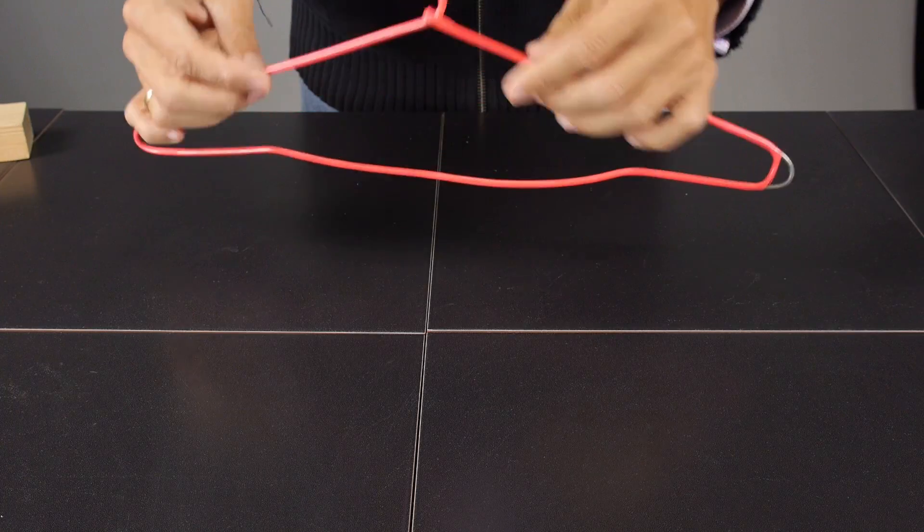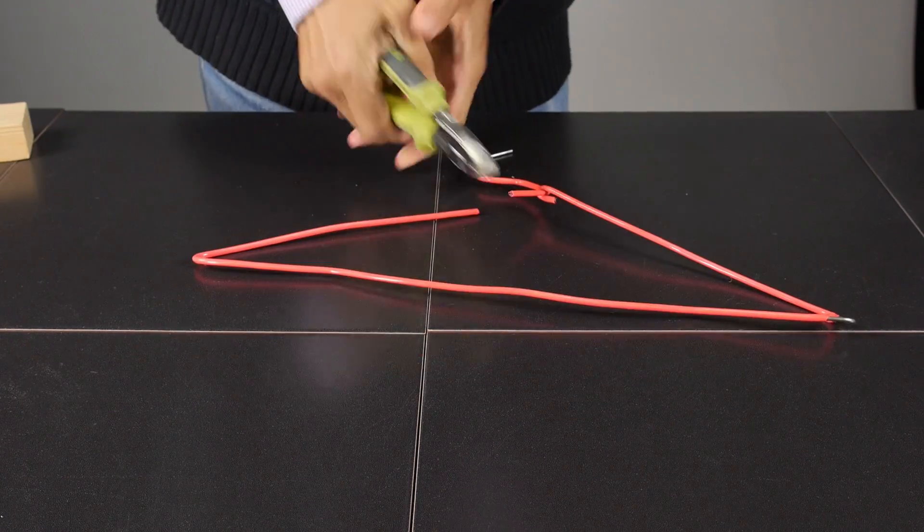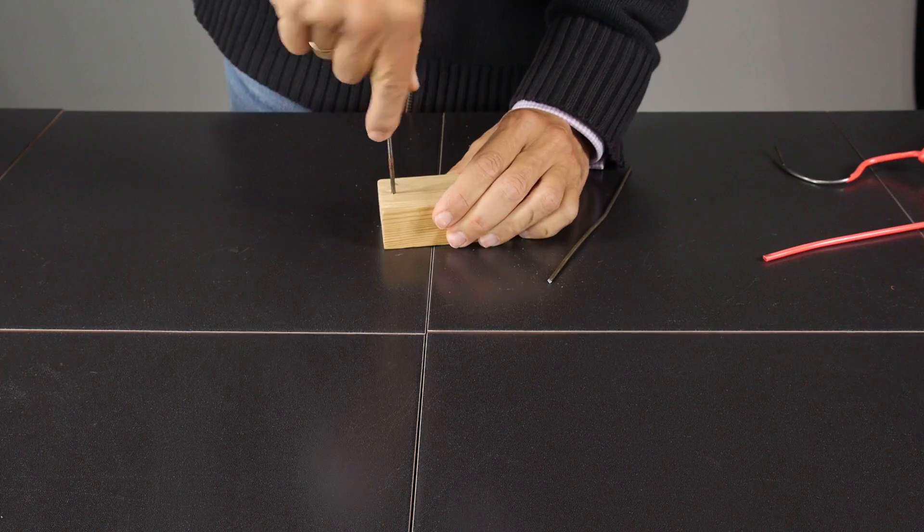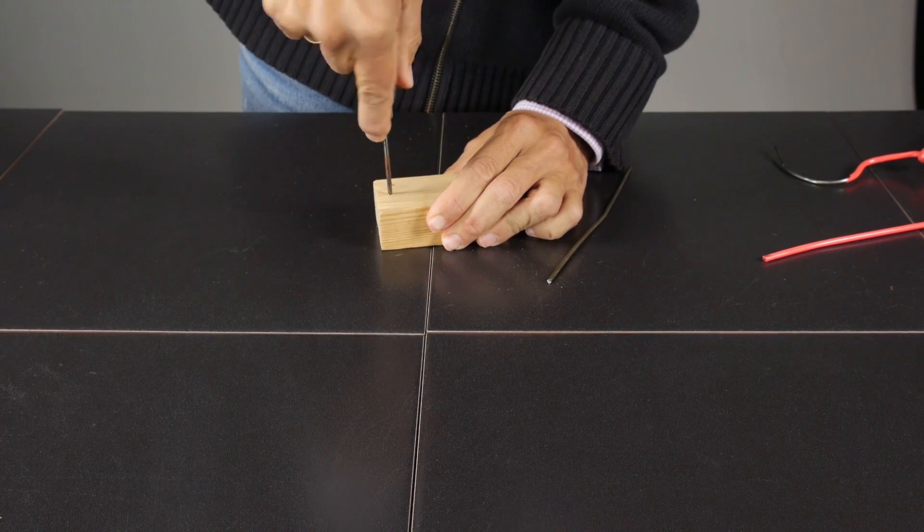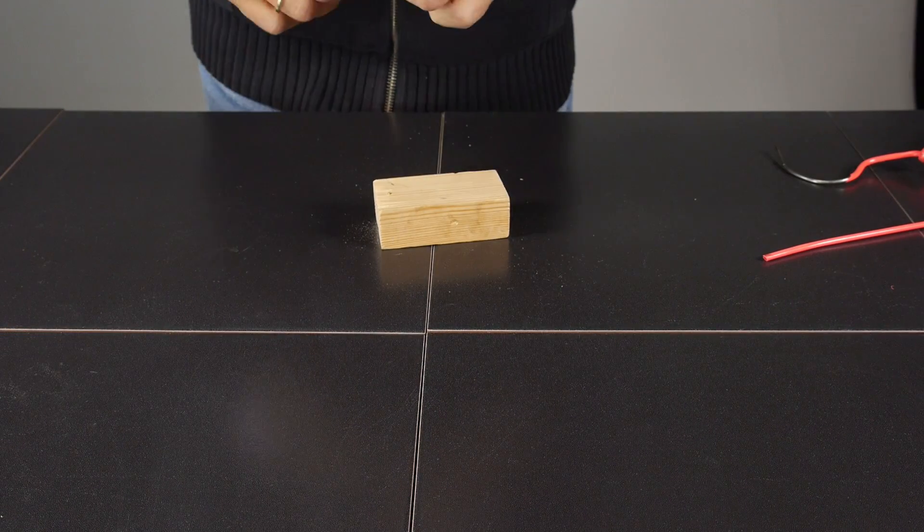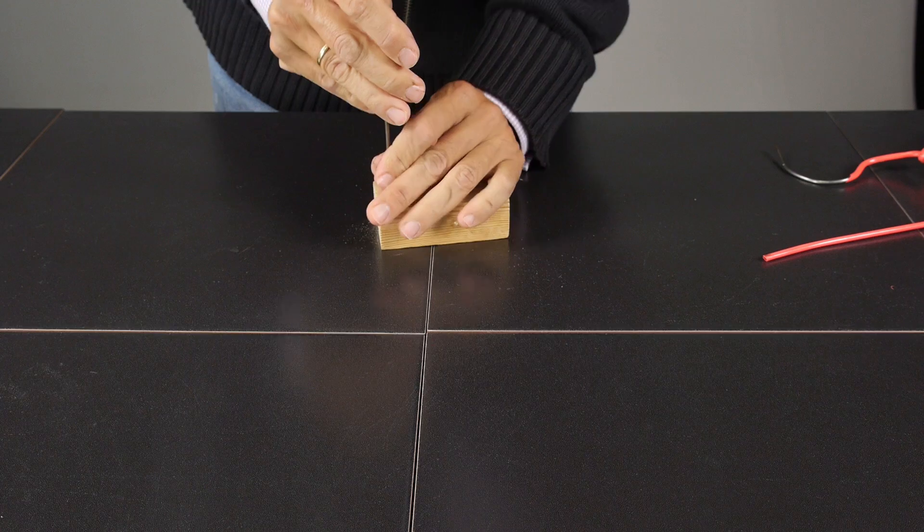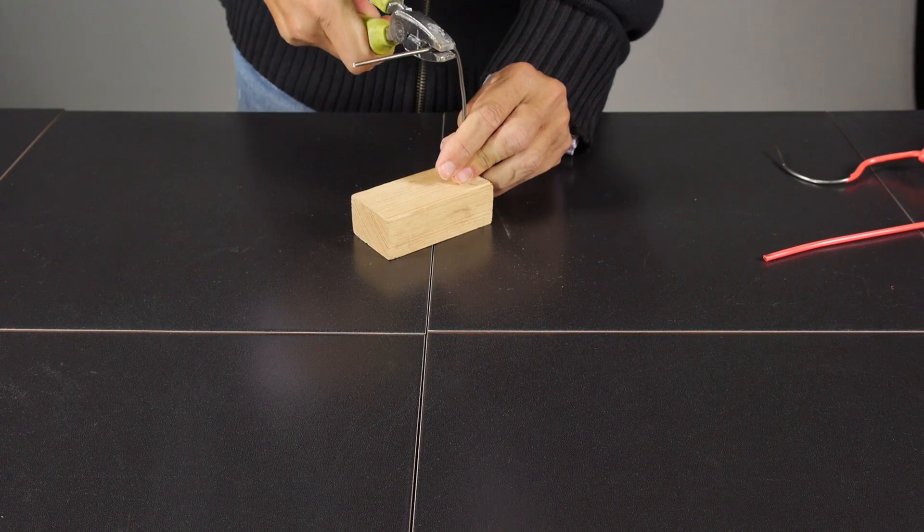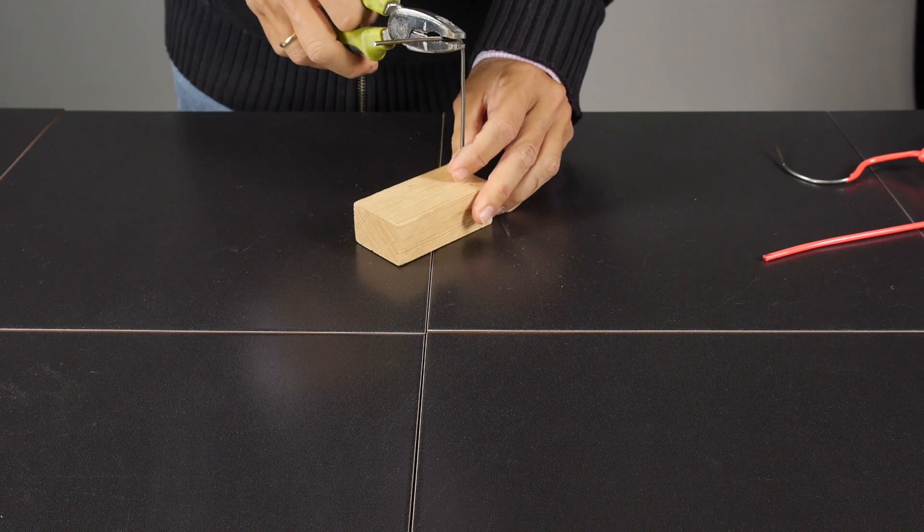I'll get some wire from an old hanger. And now on a piece of wood I make a hole to put the wire. I bend it and here is the holder.